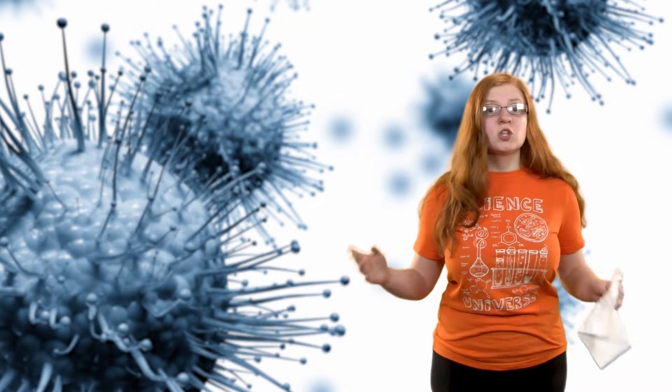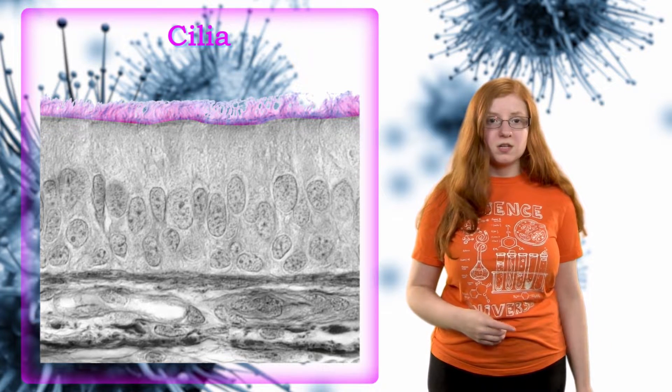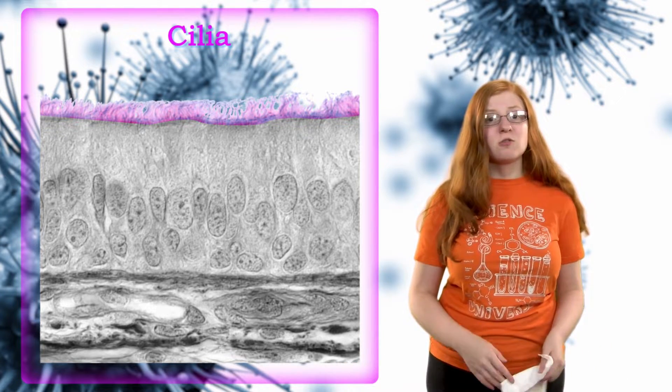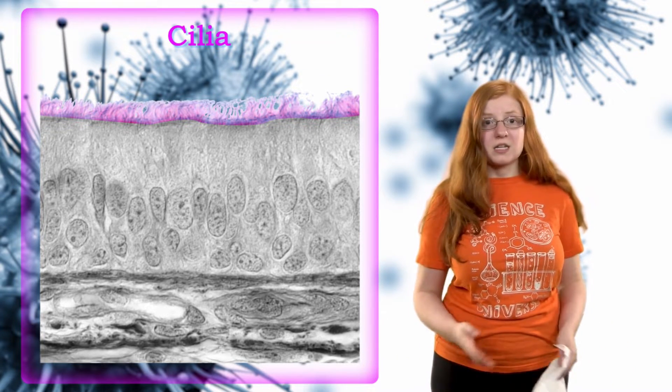First, the low humidity prevents hair-like structures in our throats to remove the virus particles. Those hair-like structures are called cilia. They are also present in your nose. Now, when you clip the hairs in your nose, those are not the cilia, though those are important as well.